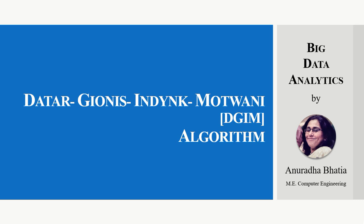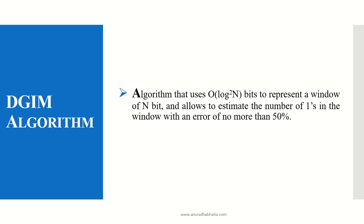Hi friends. The Datar-Jionis-Indic-Motwani algorithm for big data analytics, commonly known as DIGIM or referred to as the Motwani algorithm, is designed to find the number of ones in a data set. This algorithm uses big O log squared n bits to represent a window of n bits and allows us to estimate the number of ones in the window with an error of no more than 50%.